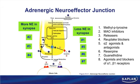Number seven is how guanethidine works — it blocks exocytosis. The drug gets inside the nerve, preventing the vesicle from migrating to the membrane, blocking fusion and therefore blocking norepinephrine release. Guanethidine's mechanism is analogous to botulinum toxin, which inhibited the release of acetylcholine. Number eight covers the various agonists or antagonists of alpha and beta receptors, which will all be discussed later in this chapter.